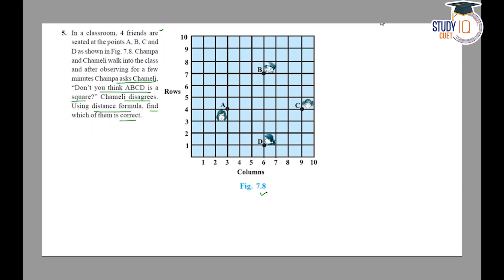तो देखिए, आपके पास जो 4 friends बैठे हुए हैं, वो A, B, C, D इन points पर बैठे हुए हैं। तो सबसे पहले, अगर आपको इनके बीच के distance find out करने हैं, तो आपको सभी के coordinates पता होने चाहिए। जैसे A point का coordinate देखो — X coordinate 3 हो गया, क्योंकि यह 0,0 मतलब origin है, तो X पर 3 distance चला है और Y पर 4 distance — तो यह 3,4 हो जाएगा।